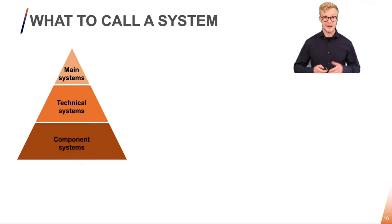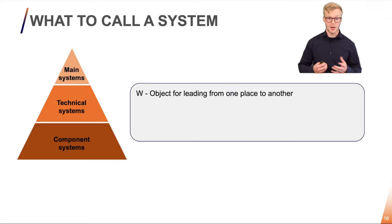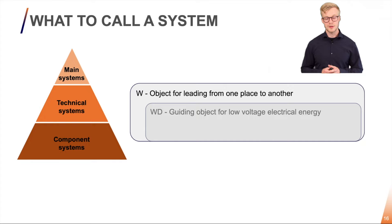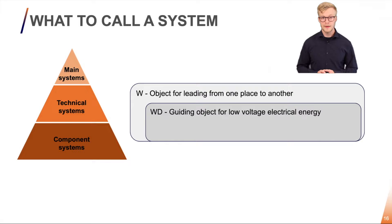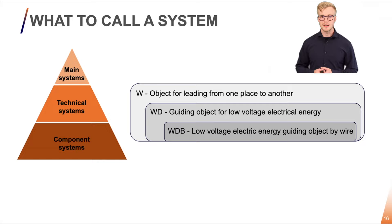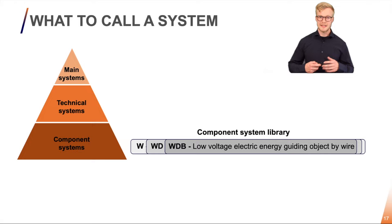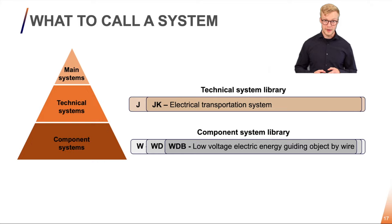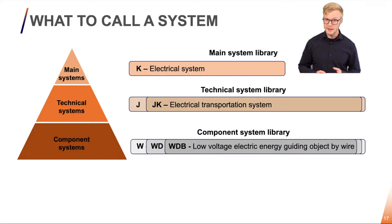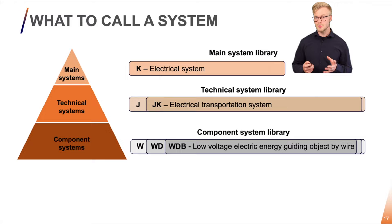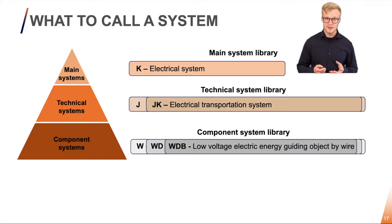So here we will find an overall class — for example W, which is 'object for leading from one place to another.' Within this class we find WD, which is 'a guiding object for low voltage electrical energy.' And within this class we find WDB, 'low voltage electrical energy guiding object by wire.' All of these classes we find in what we call the component system library. We also have technical systems, which use two-letter classification codes — for example JK, which is an electrical transportation system. We also have main systems, which use one-letter codes — for example class K, electrical system. Please notice that I have picked classes which all represent something with electrical energy, but the letter codes themselves have nothing to do with each other — they only refer to the class.